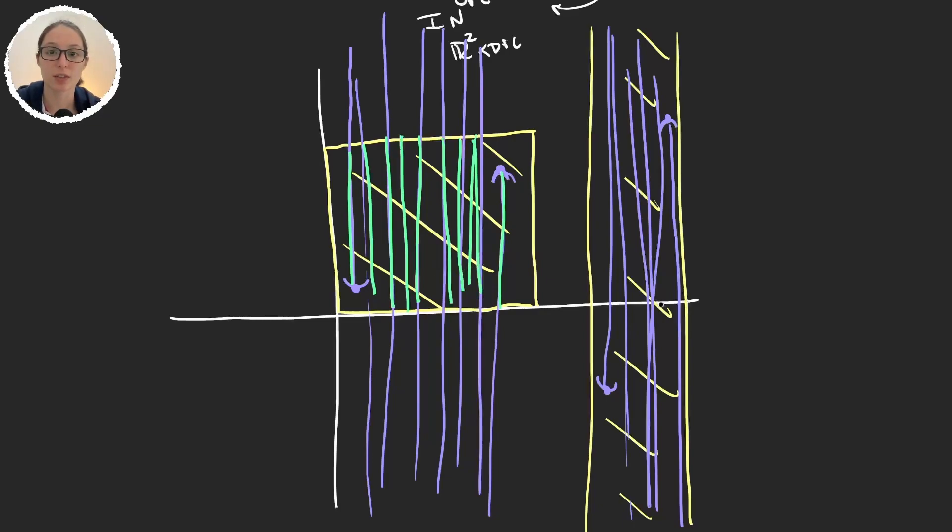Here, I cannot, because these sets go to infinity, and then they come back here. So, I cannot divide it into sections.